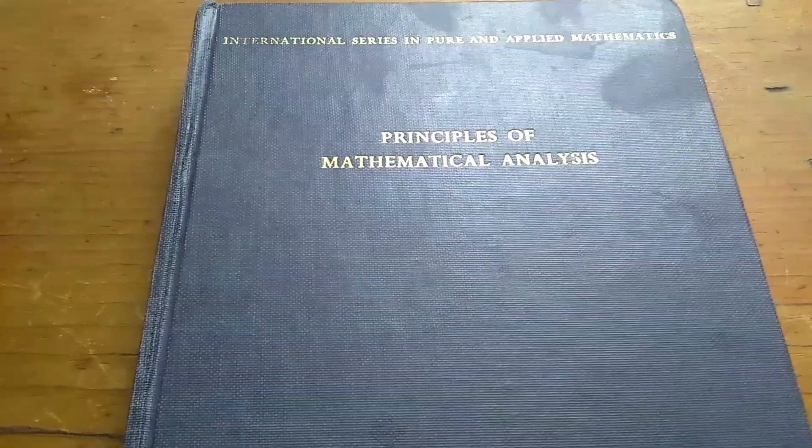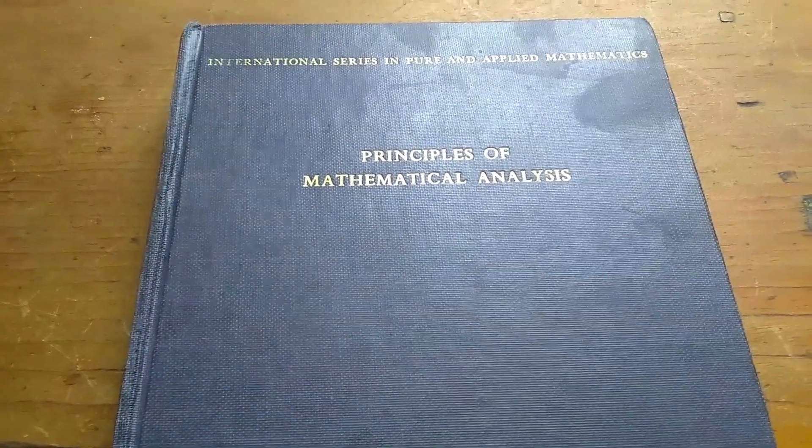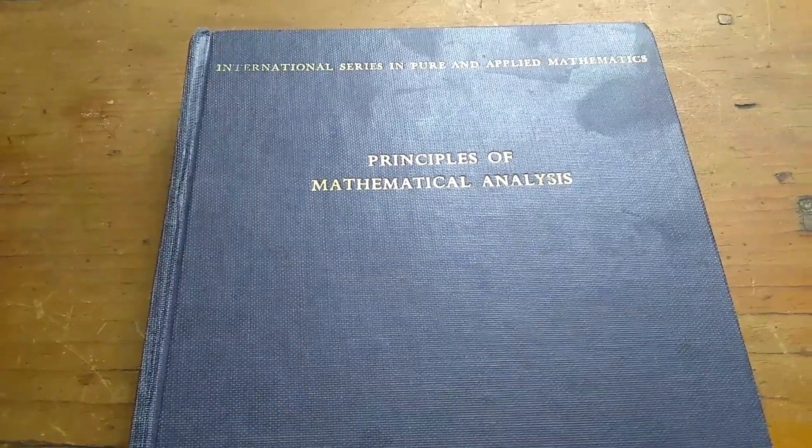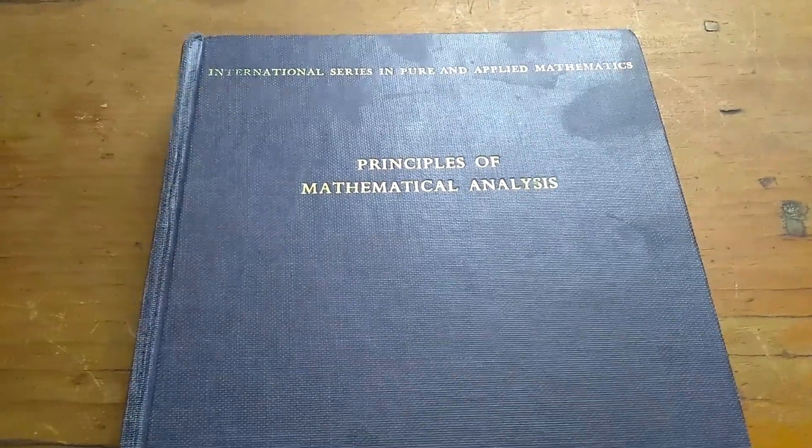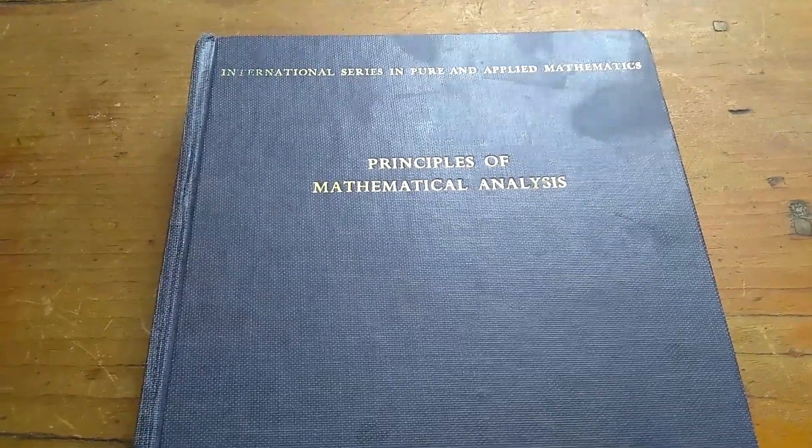It covers undergraduate mathematical analysis, also known as advanced calculus. It talks about continuity, differentiability, integrability, sequences and series of functions, etc. Whereas the regular Rudin goes into measure theory and stuff related to that.